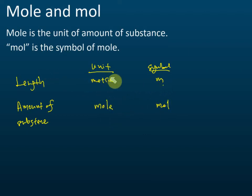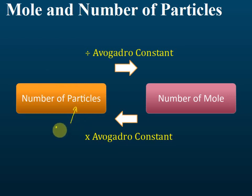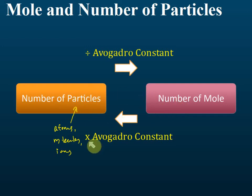That's the difference between mole and mol. If they give us the number of moles, we can find the number of particles — this can be atoms, molecules, or ions. To find the number of particles, we multiply by Avogadro's constant, which is 6.02 × 10²³.